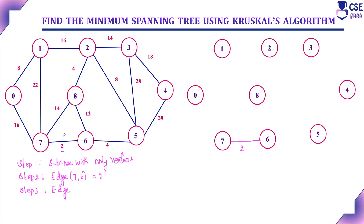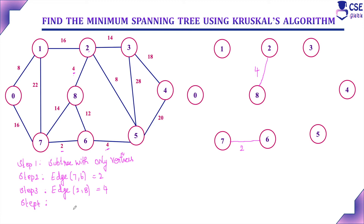Step 3: find the next minimum cost edge and include it in the subgraph. The next minimum cost edges are 2,8 with cost 4 and 6,5 with cost 4. In order, vertex 2 comes first, so we include 2,8 with cost 4. Step 4: the next minimum cost edge is 5,6 with cost 4, so we include that as well.